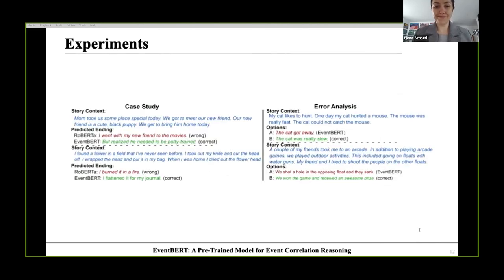The left figure shows examples where EventBERT can find the correct ending for a story, while the baseline selects a wrong option. The main reason might be that Roberta is more concerned with token-level concurrence while EventBERT takes events as units and focuses on correlation among them. For example, Roberta chooses I burned it in a fire for the second case, which might be due to strong correlation between dry and burn. In contrast, EventBERT understands that I found a flower in a field that I've never seen before and I dried out the flower head, and infers that it is more likely that I flattened it for my journal.